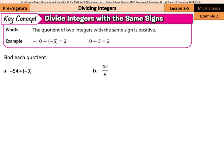Dividing integers with the same signs: the quotient of two integers with the same sign is positive. So if you have a positive divided by a positive, it's positive as it's always been. Or if you have a negative divided by a negative, that too is positive — again, just like with multiplication. For negative 54 divided by negative 3: 54 divided by 3 is 18, and negative divided by negative is positive. And 42 divided by 6 is just 7, as a positive divided by a positive is positive as it's always been.